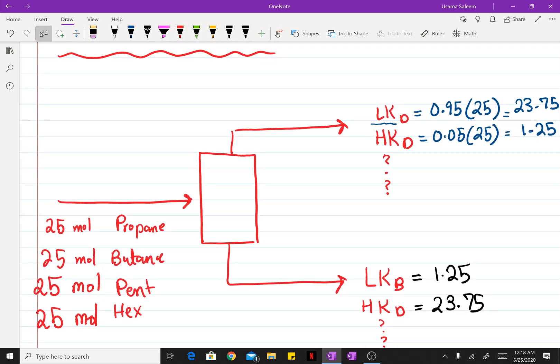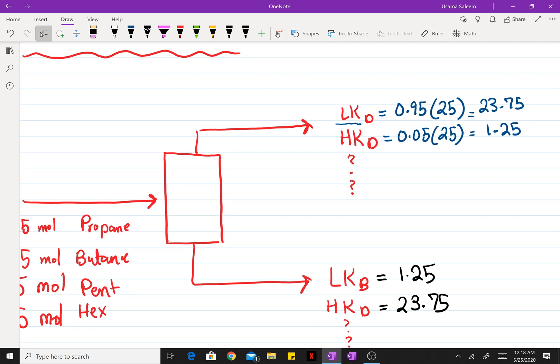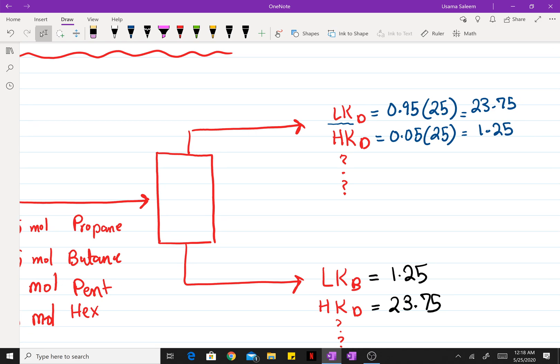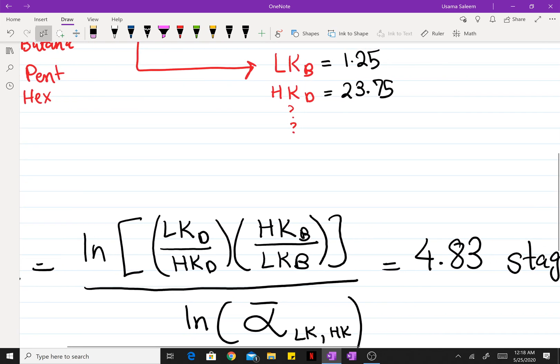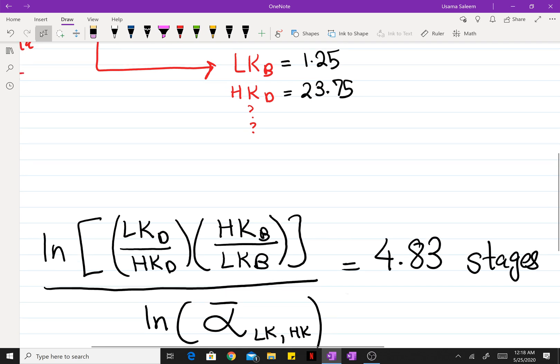Here we have the schematic for the problem that we did earlier where we had an equimolar feed of propane, butane, pentane, and hexane. And we required a 95% recovery of the light key and a 5% recovery of the heavy key. The minimum number of stages were found using the Fenske equation equal to 4.83 stages.